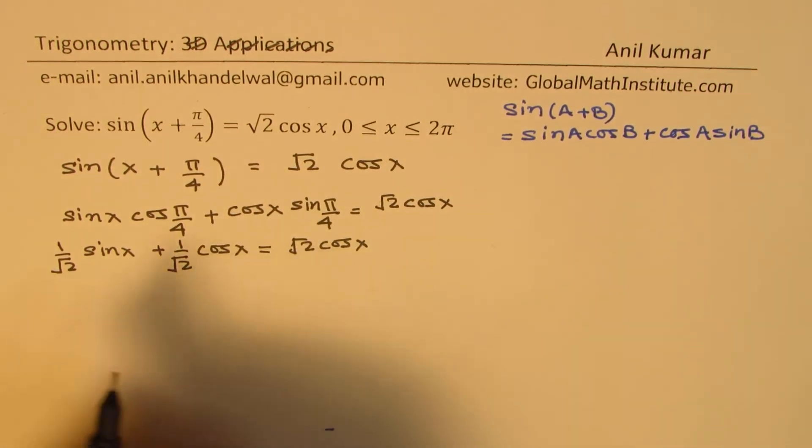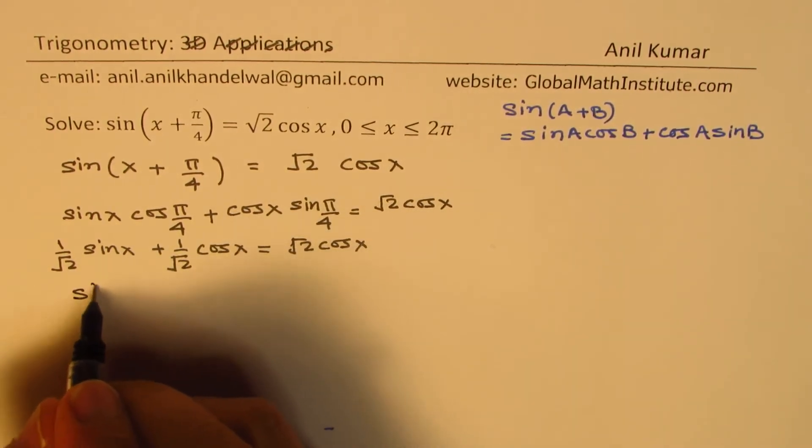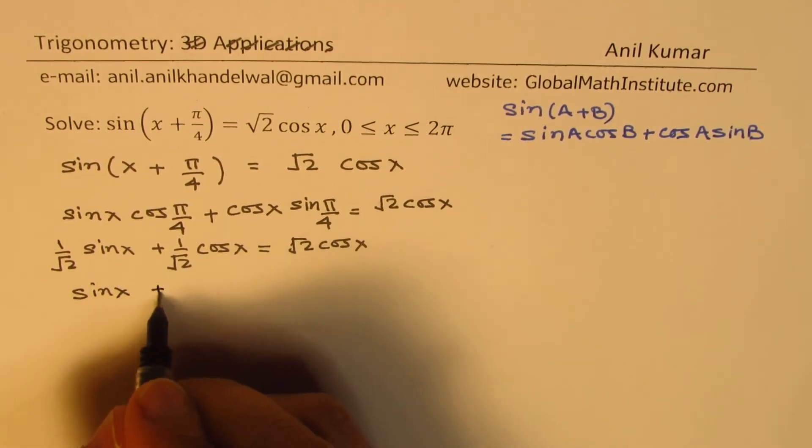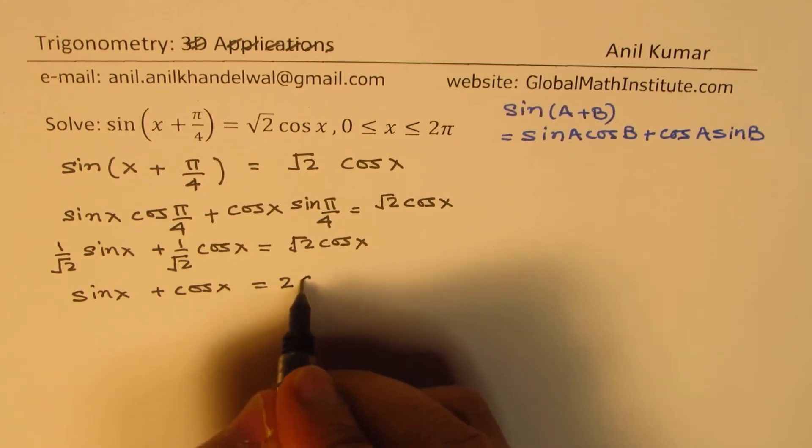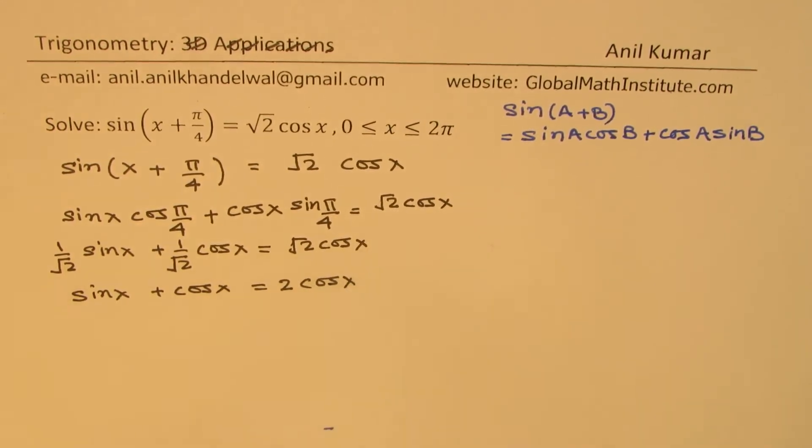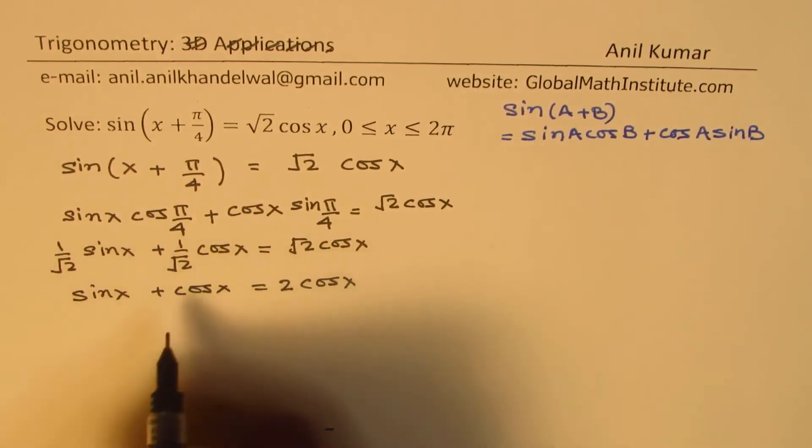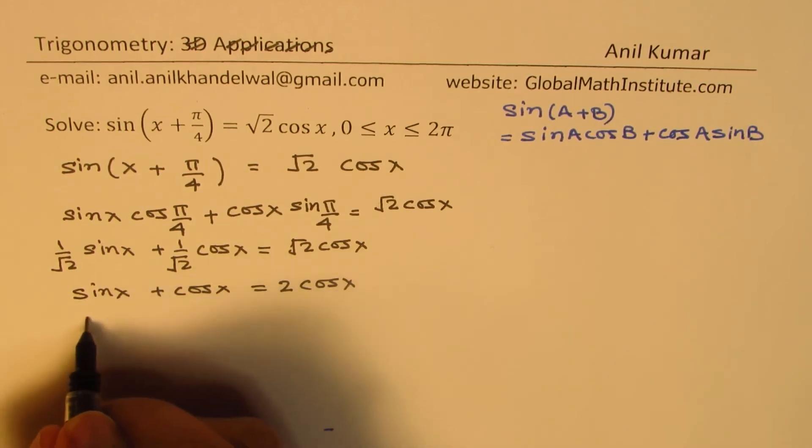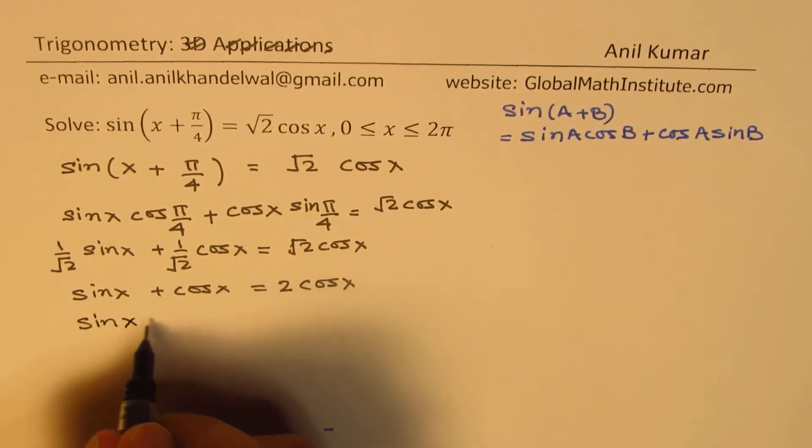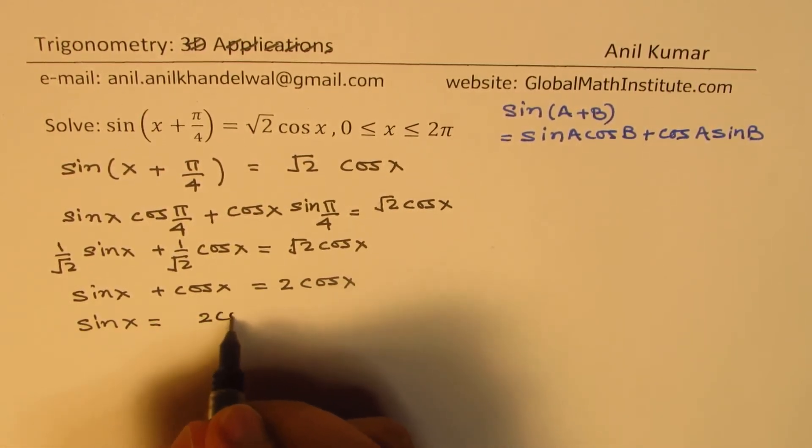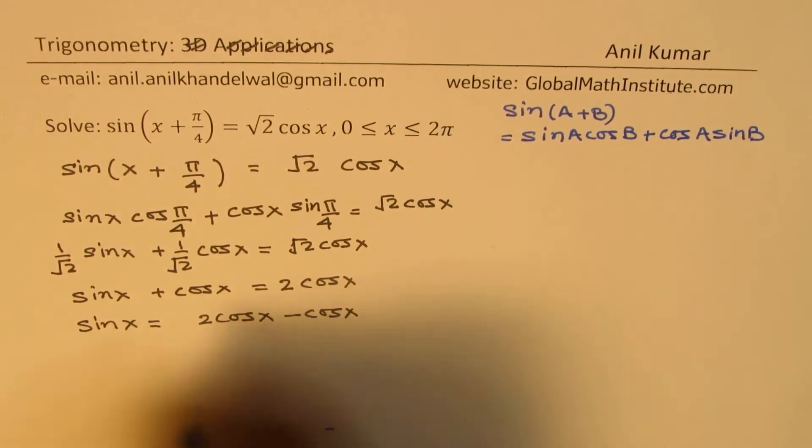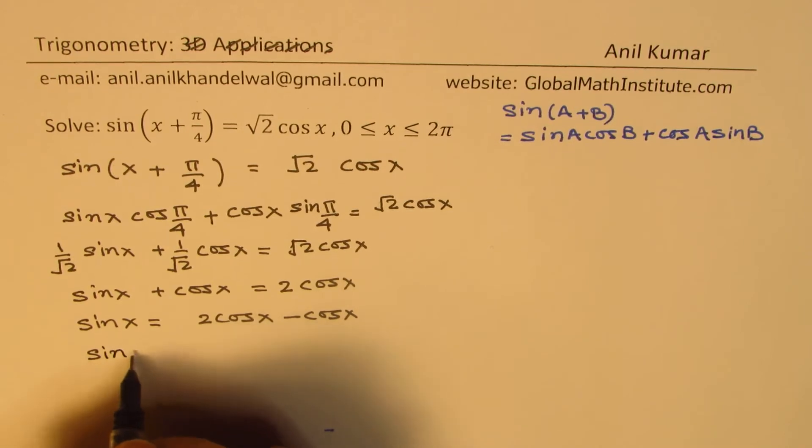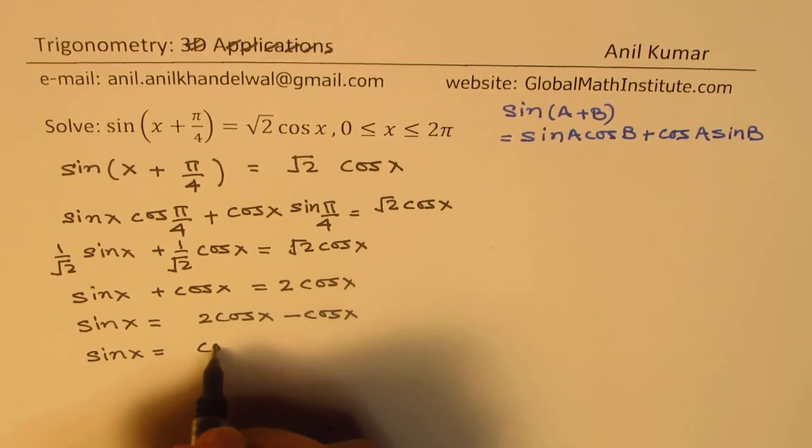Now multiplying by √2, we get sin x + cos x = 2 cos x. We can take cos x to the right side, so we get sin x = 2 cos x - cos x, or sin x = cos x.